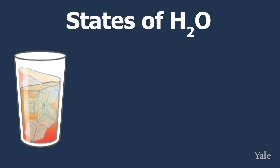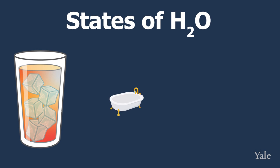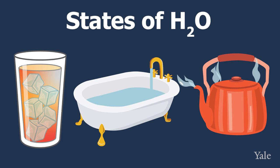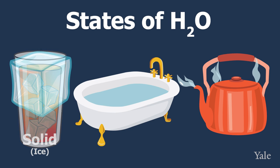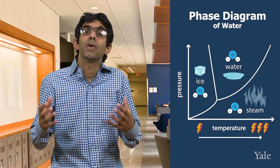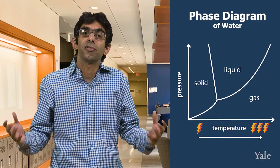You might put ice cubes in your iced tea, or water in your bathtub, or see steam coming out of your kettle. These are all examples of water in different states—solid, liquid, or gas. Even though the actual molecules and atoms in the water don't change, it is still H2O. Its state changes when you add or remove energy from it.